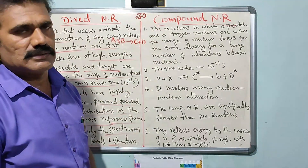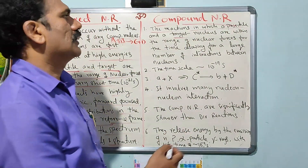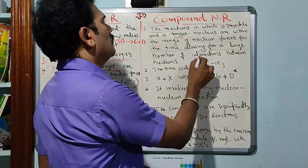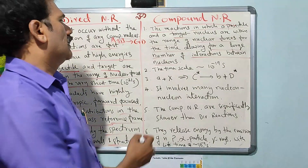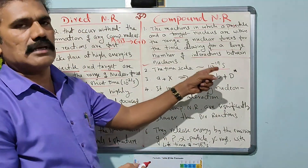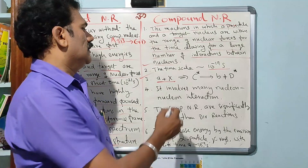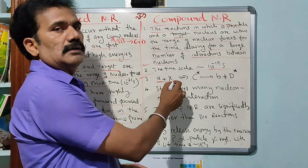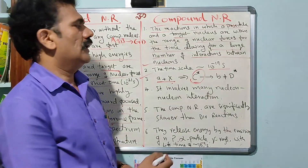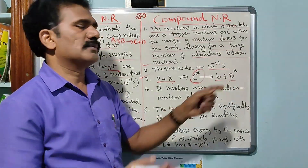Now let us see compound nuclear reactions. In compound nuclear reactions, a projectile and a target nucleus are within the range of nuclear forces for a time allowing for a large number of nucleon-nucleon interactions. The time scale may be on the order of 10 to the power of minus 19 seconds, which is comparatively larger. The general equation is A plus X — the projectile interacting with target X gives rise to a compound nucleus first, denoted C star. It then produces products B and D star, where D star may be another compound nucleus that further splits into two products. B may be an ejectile such as an alpha particle, proton, neutron, etc.